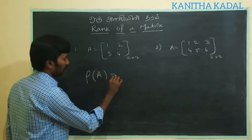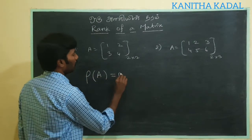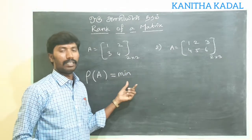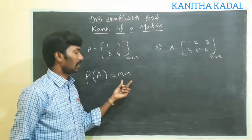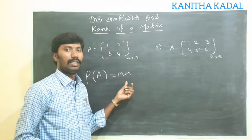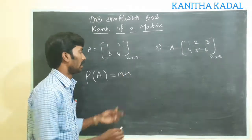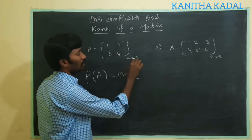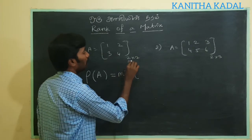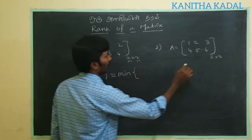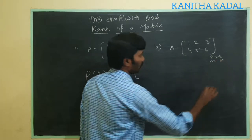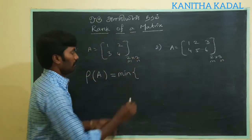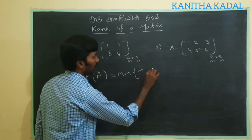Rho of A is equal to the minimum of M and N.